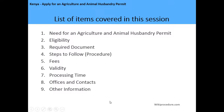Let's get back to our presentation. The list of items we will cover in this session includes: the need for an agricultural and animal husbandry permit, the eligibility criteria, the required documents, steps to follow in making the application, fees, validity period, processing time, office information and contact location, and any other relevant information.